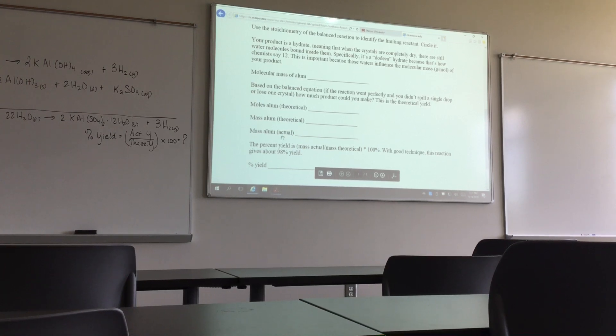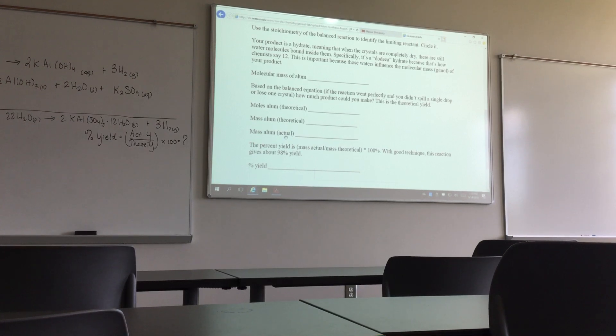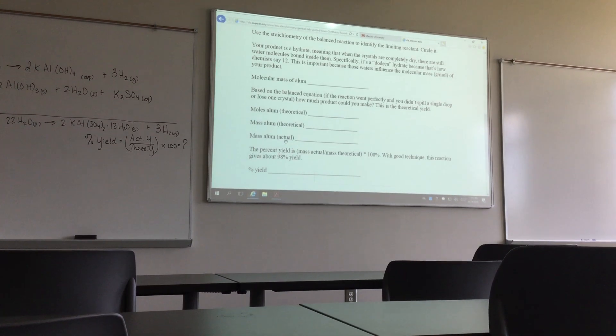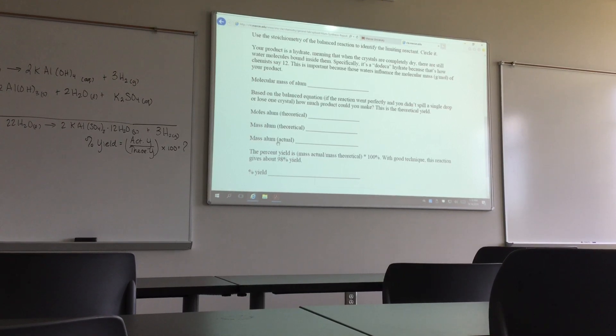Then you do a conversion to mass through the periodic table. Then you have the actual mass of alum—that's what you ended with in the lab. That's the white powder you massed out at the very end on the watch glass.